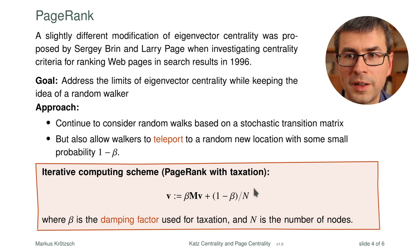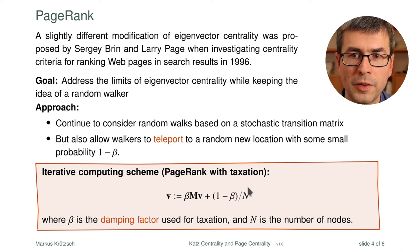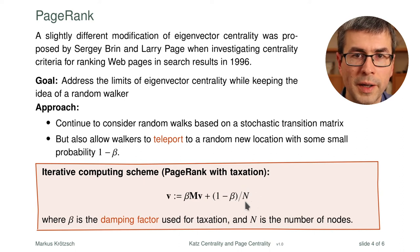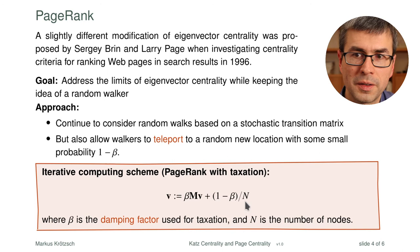There's an iterative computing scheme for this. The new vector of probabilities is: beta multiplied by what we would get from eigenvector centrality in one step — multiplying the matrix by v to get probabilities of reaching any location by moving along edges — plus the probability of having teleported, which is (1 − beta)/n, since there's a probability of 1/n to end up in any place.